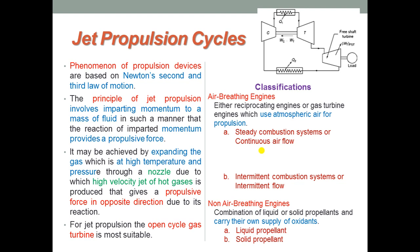The steady flow combustion system is further classified into three different types: turbo jet, turbo prop, and ram jet. The intermittent combustion system has pulse jet, also called the flying bomb type. These are the few classifications based on the principle phenomena of propulsion devices.